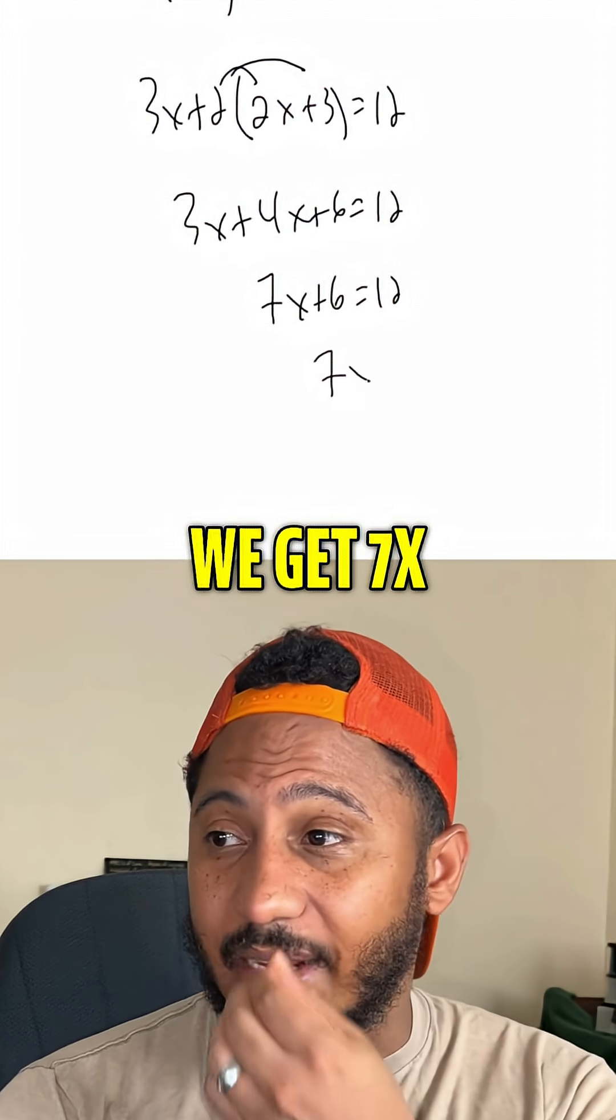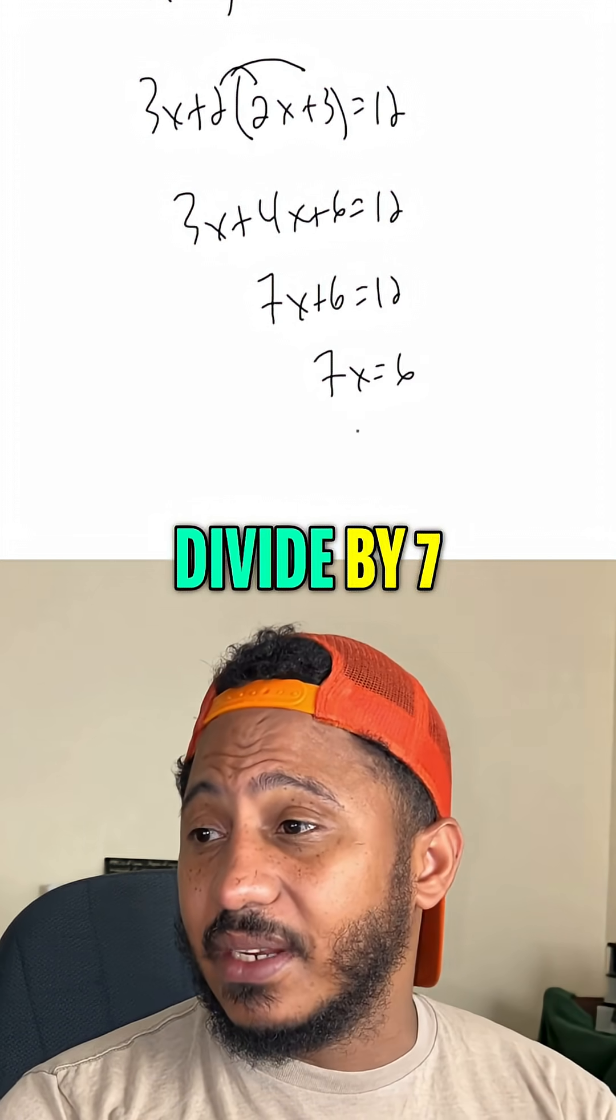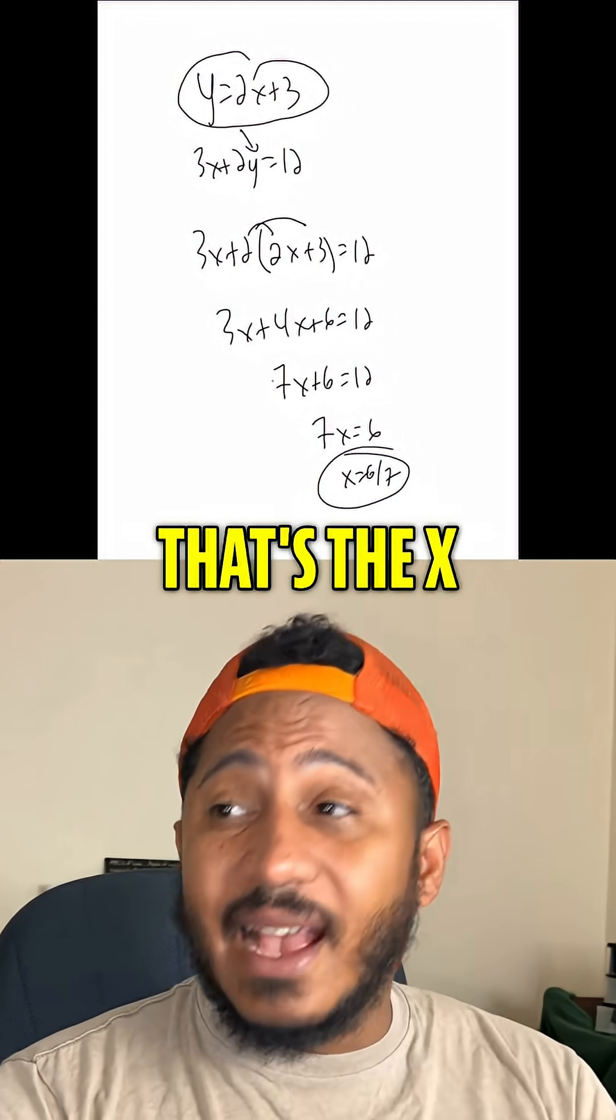If I subtract 6, we get 7x equals 6, and then divide by 7, x equals 6 sevenths. So that's the x coordinate.